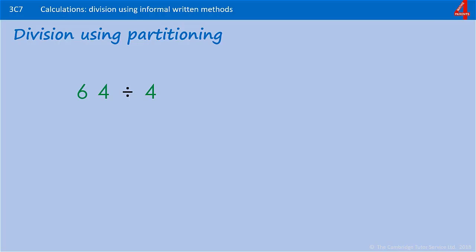Your child might know their four times tables, up to four times twelve, but they might not know how many fours go into sixty-four. Partitioning is really useful here.